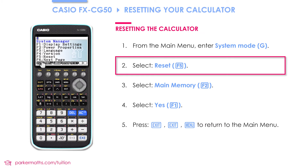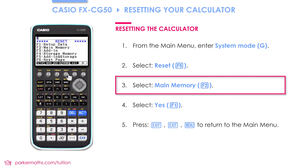Next we choose F5 reset. There are lots of different options for resetting your calculator. Most of the time though, resetting the main memory, which is F2, would do the trick.